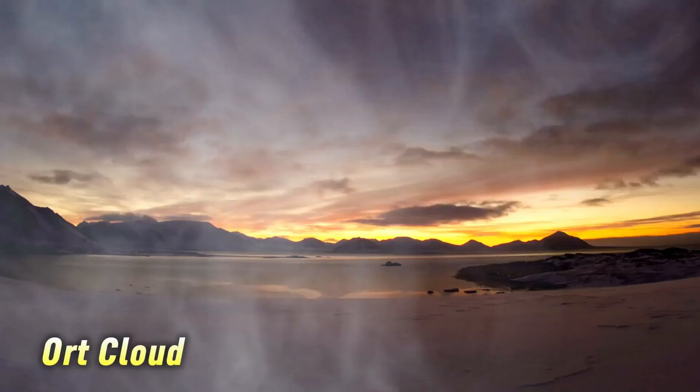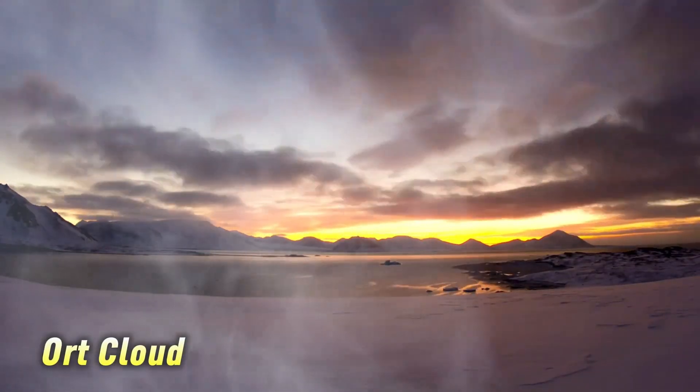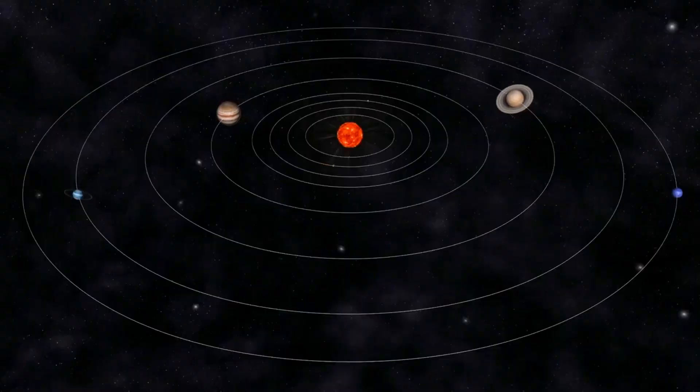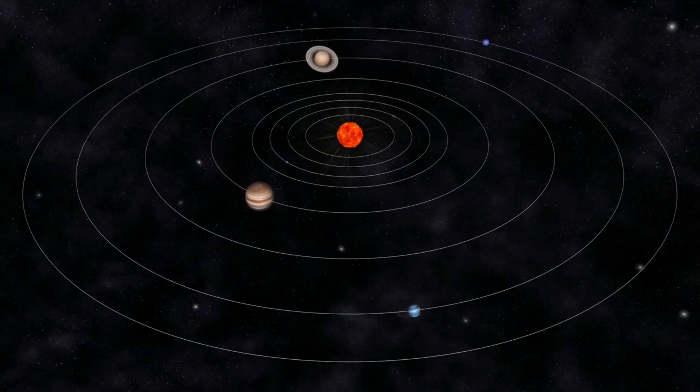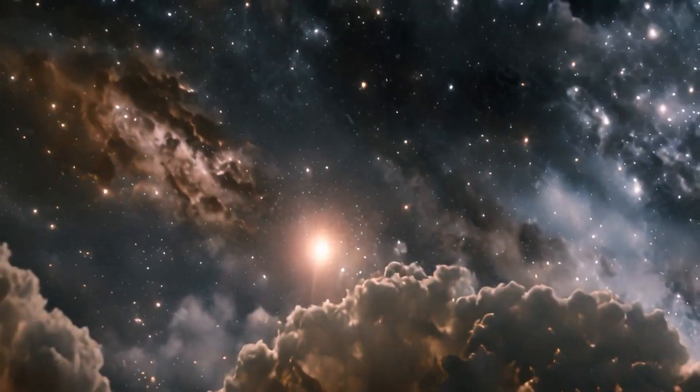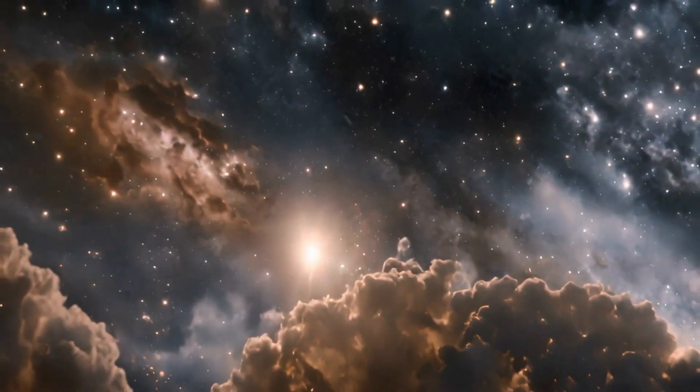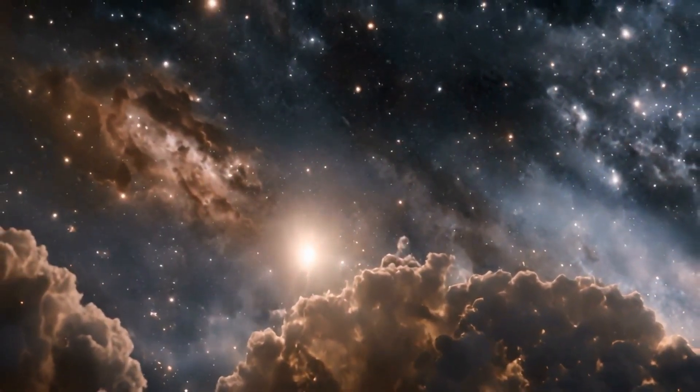Now let's talk about something even further out, the Oort cloud. It's this massive cloud of icy stuff way out there in space. Some scientists think it reaches as far as 100,000 times the distance between Earth and the Sun, which is about 1.9 light-years. That's almost hitting the boundary of where our solar system ends and interstellar space begins.